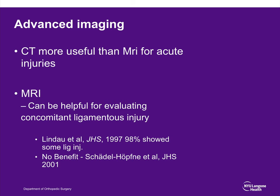For advanced imaging, a CT scan is more useful than an MRI for acute injuries. MRIs can be helpful for evaluating concomitant ligament injuries, but up to 98% of fractures showed some ligament injury in a 1997 study, and additional MRI was found to be of no benefit in a 2001 study. I always tell patients that almost 100% of the time they will have some ligament injuries, and ligament injuries can be painful longer than bony injuries.